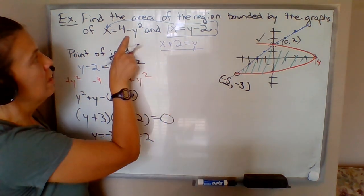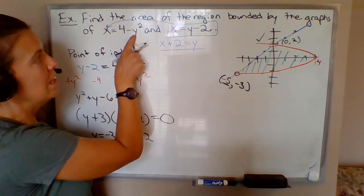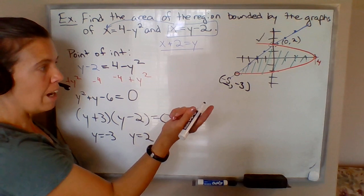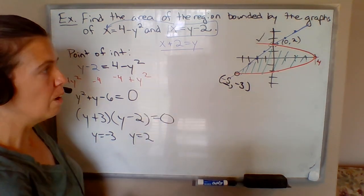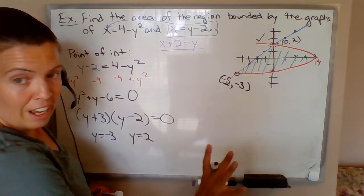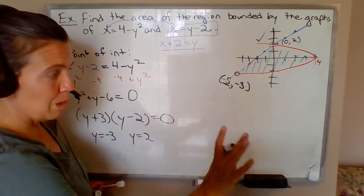And just to double check, if y is -3, plug it into this equation, you'll have 9 here. 4 - 9 is -5. So yes, that (x, y) pair satisfies both equations. So there's your point of intersection. So we've got the graph—phase 1 is complete.